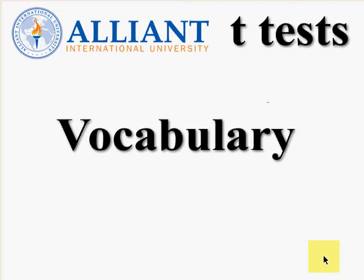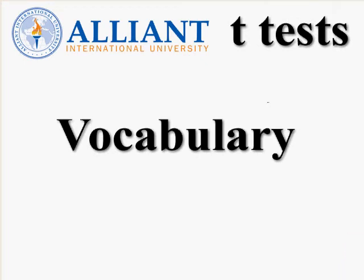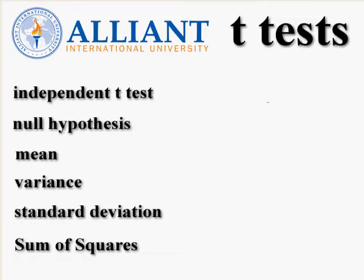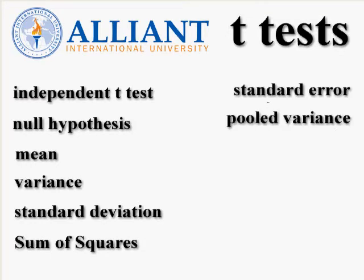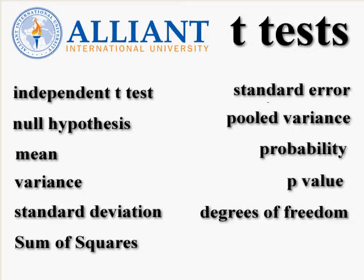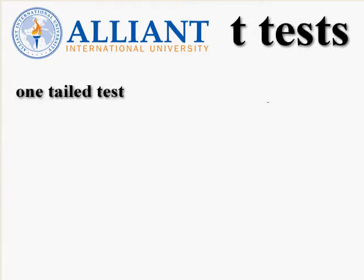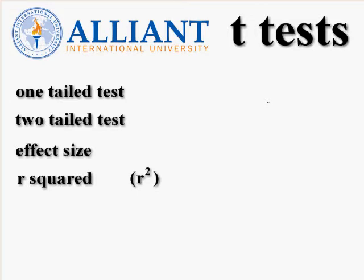The vocabulary words to be used in this upcoming video are: independent t-test, the null hypothesis, the mean, the variance, the standard deviation, the sum of squares, standard error, pooled variance, probability (also called p-value), degrees of freedom, significance, a one-tailed test, a two-tailed test, the effect size, r-squared, and Cohen's scale for effect size. All of these concepts are briefly described in this video.